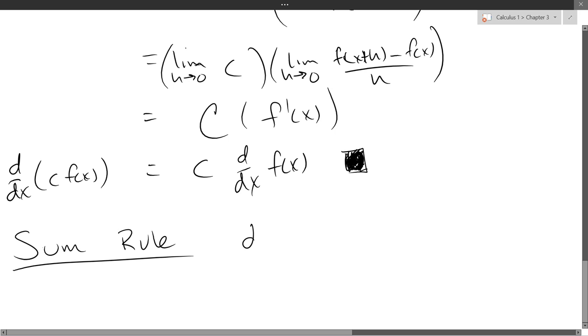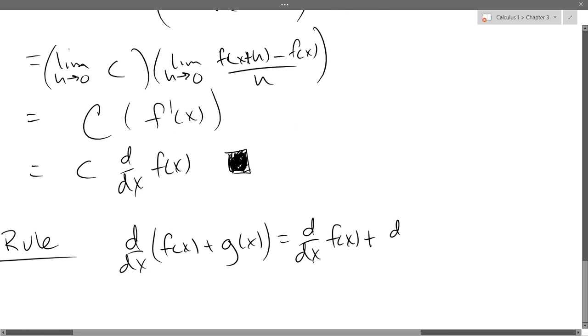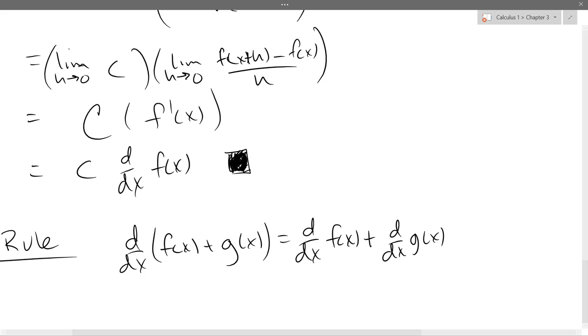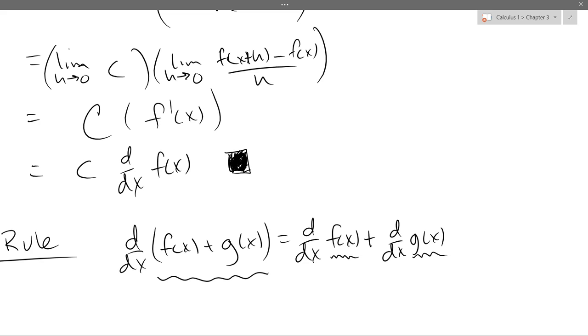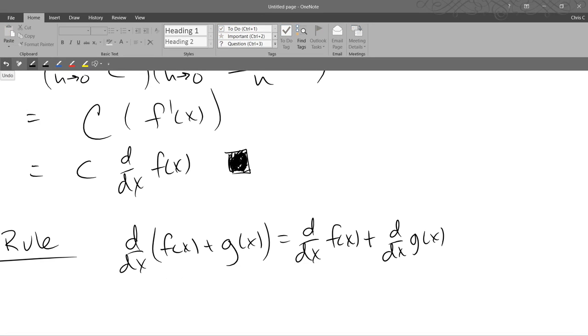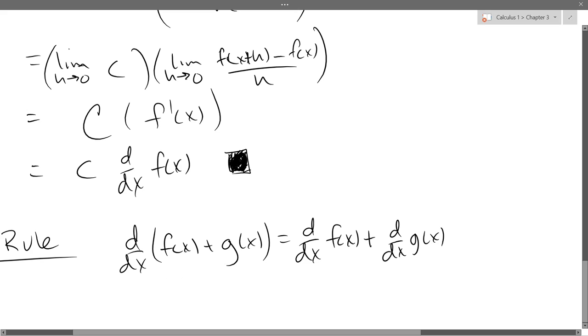Sum rule is even easier to show. Now, remember the derivative operates on what's to the right of it. So if I look at the left side, the d/dx operates on everything above that squiggly line. If I go look at the right side, the first d/dx operates on f of x. And the second d/dx operates on g of x. So they operate on what's to the right of them. So as soon as you see the plus or any other math operation, you're not taking the derivative of that. It's just what's to the right of it.